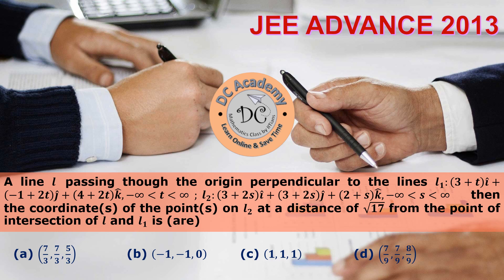Hi, in this video we will solve a particular problem which appeared in JEE Advanced 2013. First we understand the problem statement. We have a line L that passes through the origin and is perpendicular to lines L1 and L2, where the vector equations of L1 and L2 are given. We need to find a point on line L2 which lies at a distance √17 from the point of intersection of L and L1.